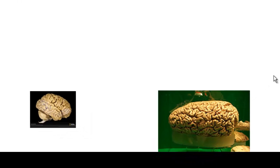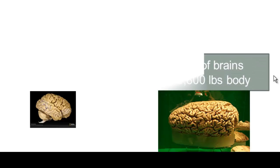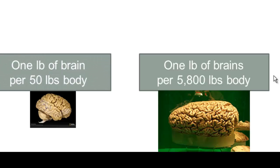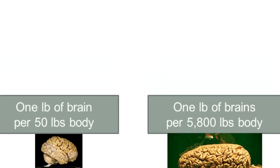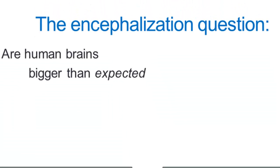So here's our sperm whale brain and there's our three pound human brain. When we relate these to body mass, we find that there's one pound of brains per 5,800 pounds of body mass in the sperm whale, whereas there's one pound of brain per 50 pounds of body mass in a human being. So relatively speaking, we have a lot more brains. But the question is, are human brains bigger than expected for a mammal of our size?